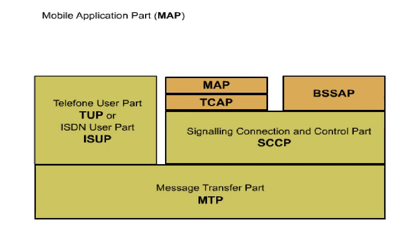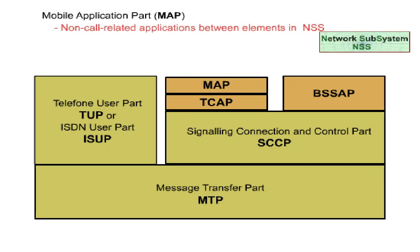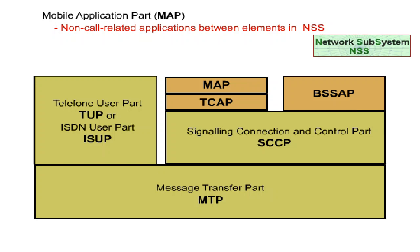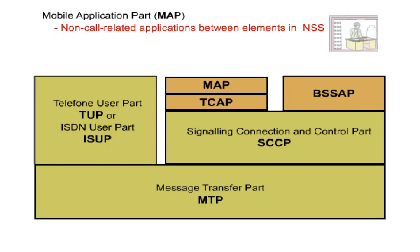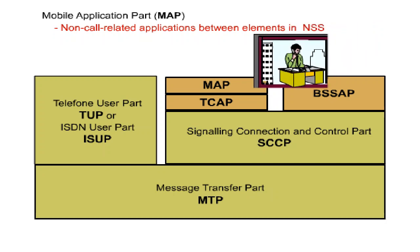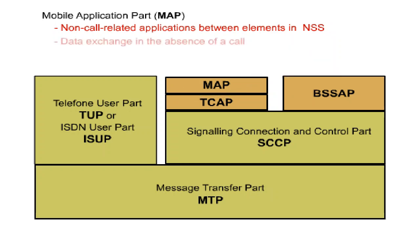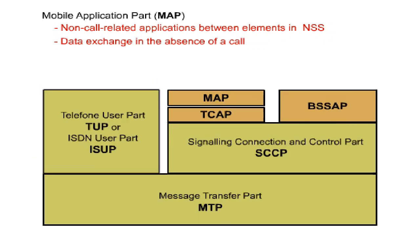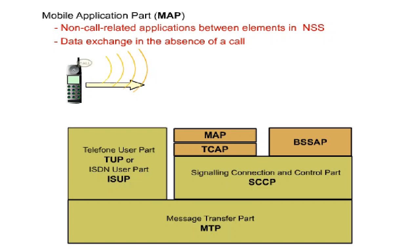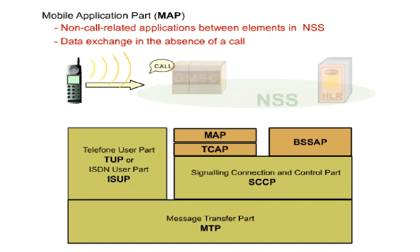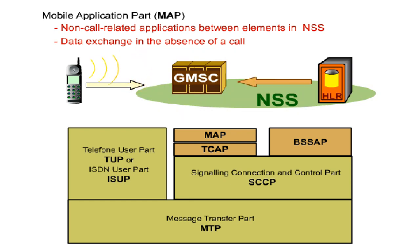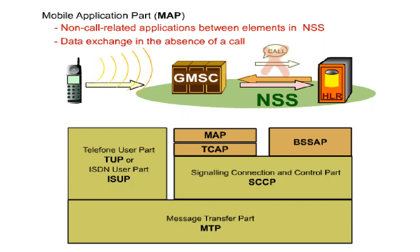The Mobile Application Part, MAP, is a GSM-specific protocol for non-call-related applications between elements in the NSS. MAP resides directly on top of TCAP, which can be used as a secretary's office by the MAP, and which coordinates and guarantees a smooth MAP communication. A MAP-based communication takes place when data is exchanged between NSS elements in the absence of a call. This is the case, for example, with normal call setup. To put a call through to the subscriber, the Gateway MSC must request necessary routing data from the HLR. Thus, there is no data exchange between the GMSC and the HLR without the actual call being routed to the HLR. In such cases, the network relies on MAP, which is used for signalling communication between NSS elements.